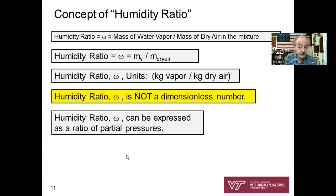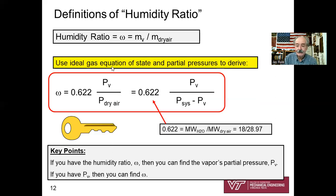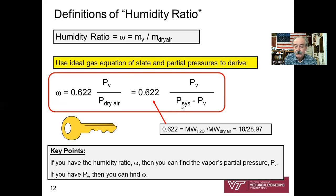The humidity ratio omega can be expressed as a ratio of partial pressures. Starting from the definition, you can derive: omega equals 0.622 times the partial pressure of the vapor divided by the partial pressure of the dry air. That equals 0.622 times P-vapor divided by (P-sys minus P-vapor). The 0.622 is simply the ratio of molecular weights of H₂O to dry air: 18 divided by 28.97.